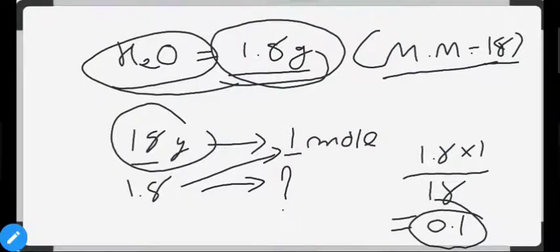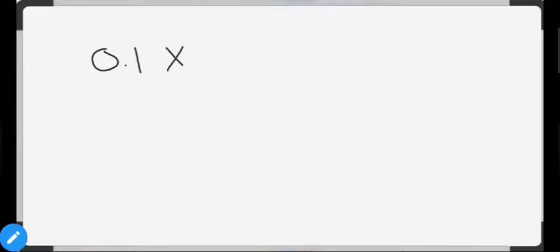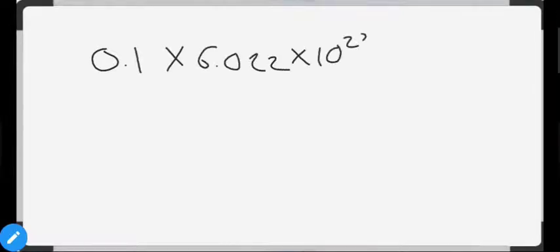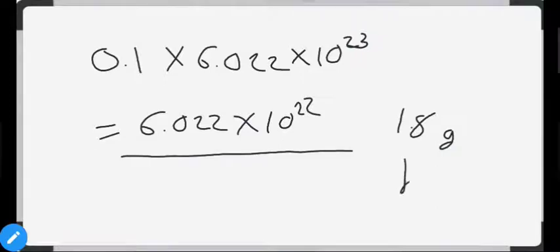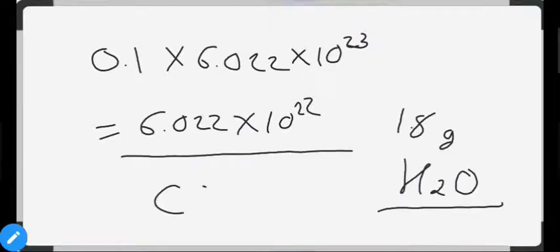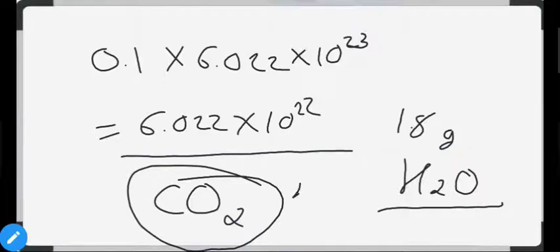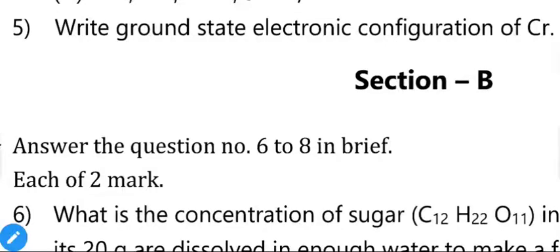If the question asks for the number of molecules, multiply moles by Avogadro's number, 6.022 × 10²³, to get 6.022 × 10²² molecules in 1.8 grams of H₂O. Now do the same calculation for carbon dioxide: molar mass is 44 and the given quantity is 4.4 grams.